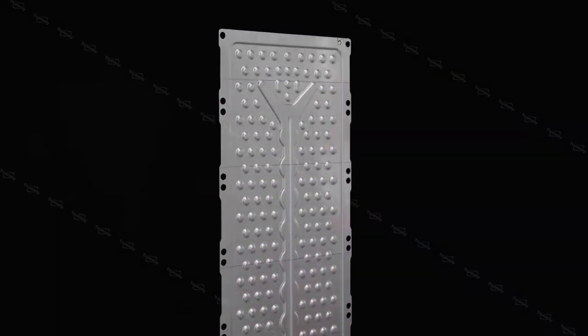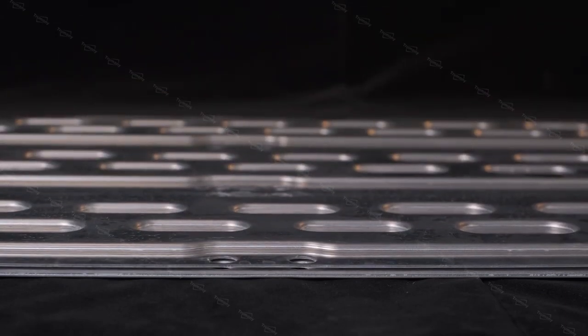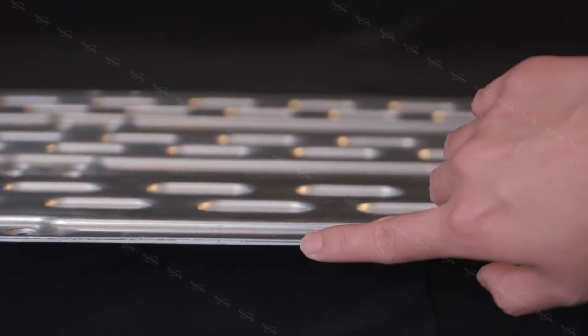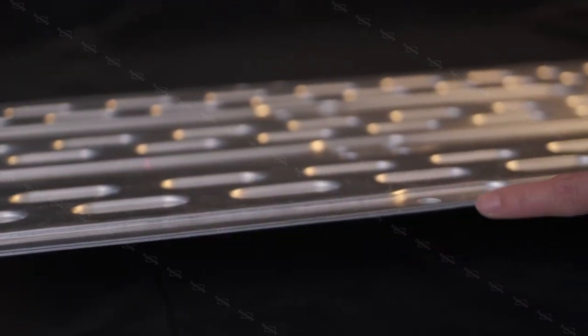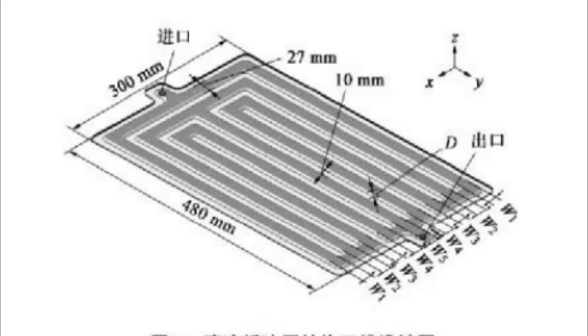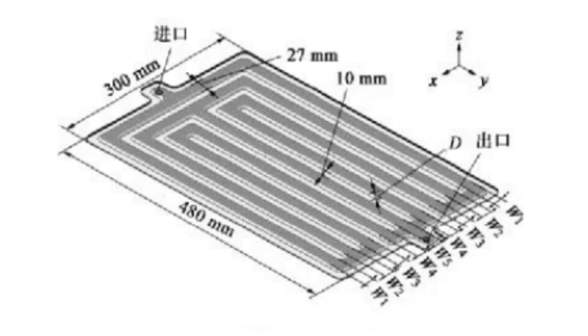The stamped liquid cooling plate is composed of upper and lower cooling plates which are welded together. The upper cooling plate is directly attached to the bottom of the battery module through a thermal interface pad. The lower cooling plate is a stamped structure with inner runners.